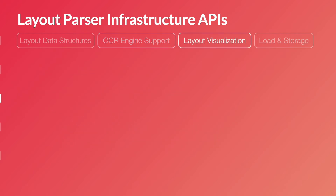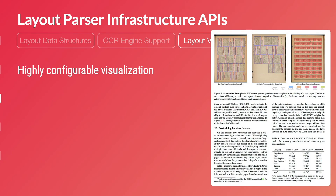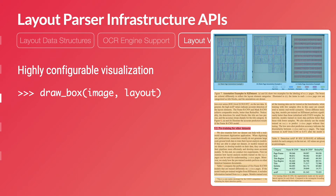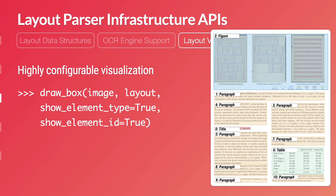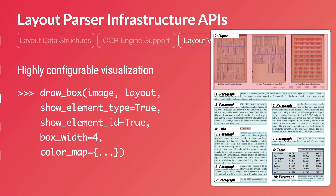Layout Parser also comes with rich support for layout visualization for both debugging and presentation. For example, the drawbox function is used to create the layout visualizations shown on previous slides. When debugging, you can display the type of the regions by setting a parameter, or even the index of the regions by adding another parameter. You can further style the boxes, changing colors to high contrast to make it more visually accessible.